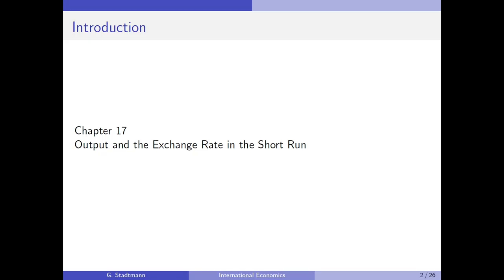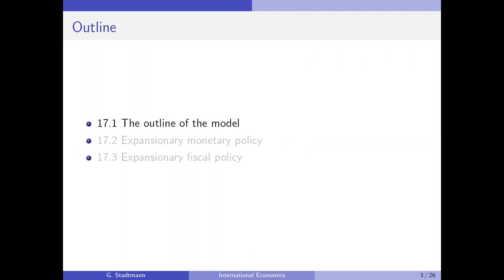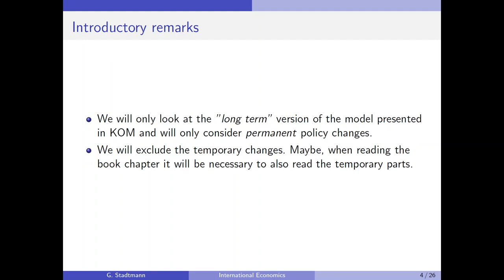Welcome everybody. I would like to talk about chapter 17 of the Krugman-Obsfeld-Mehlitz textbook. The topic is output and the exchange rate in the short run. Let's start with the outline of the model, the assumptions and the equilibrium conditions. The version of the model we are going to use is the long-term version of the model presented in the Krugman-Obsfeld-Mehlitz textbook, and we will only consider permanent policy changes.